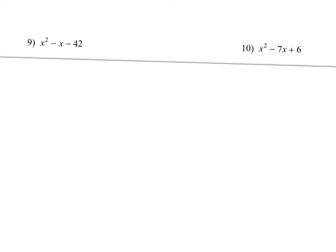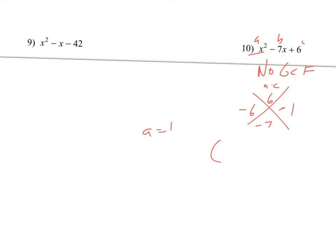Here we're factoring trinomials. I see no GCF. So I use the X method: a times c up top — that's going to be 6 — and b, which is negative 7, goes on the bottom. I need two numbers that multiply to positive 6 but add to negative 7. Since they multiply to a positive and add to a negative, they both have to be negative: negative 6 and negative 1. When our a value is 1, we can just write our parentheses directly: x minus 6 and x minus 1. Done.